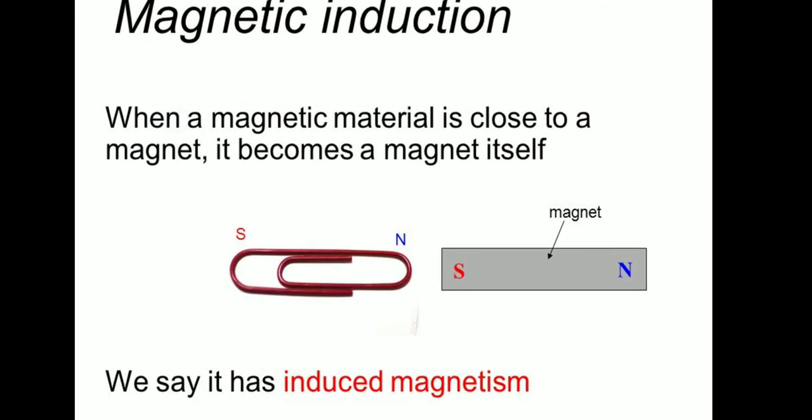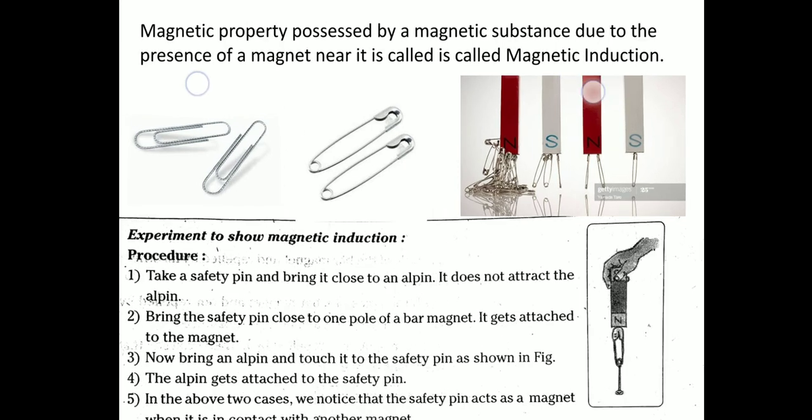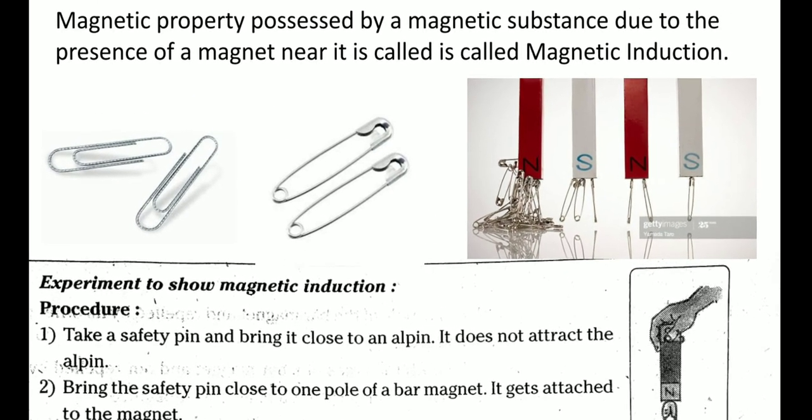Coming to the second property of magnets — that is, magnetic induction. When a magnetic material is close to a magnet, it becomes a magnet itself. For example, a safety pin, when it comes in close contact with a magnet for a long period, it becomes a magnet itself. We say that it has induced magnetism. The magnetic property possessed by a magnetic substance due to the presence of a magnet near it is called magnetic induction.